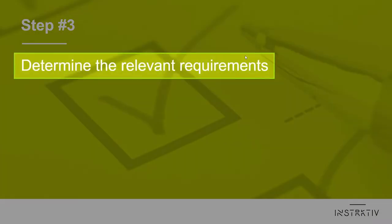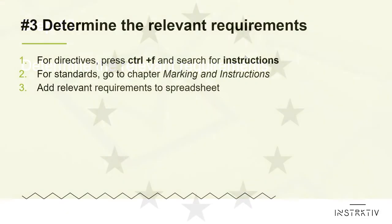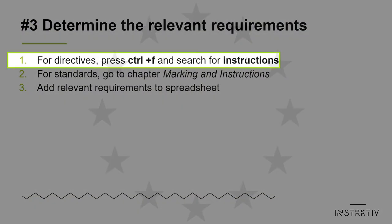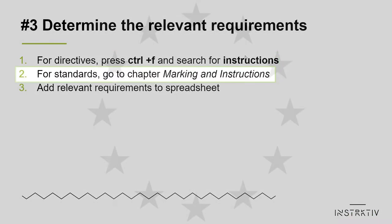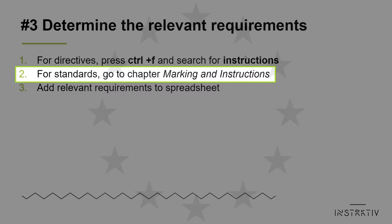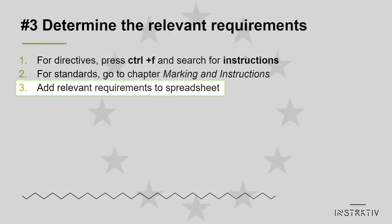In step three we're going to determine the relevant requirements. Open the directives or regulations that you've saved, press Ctrl+F and search for 'instructions.' For standards, go to the chapter on marking and instructions. Add relevant requirements to the second column of the spreadsheet.